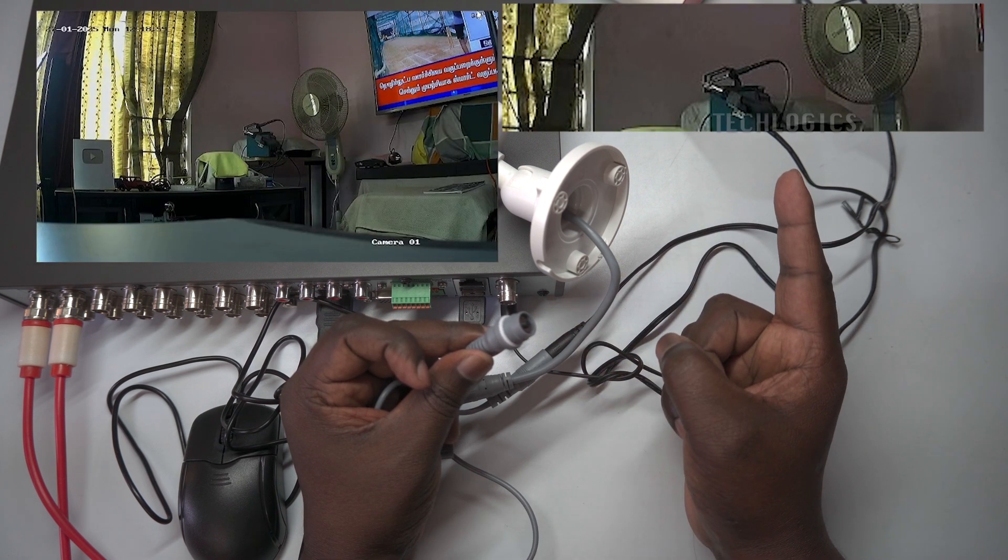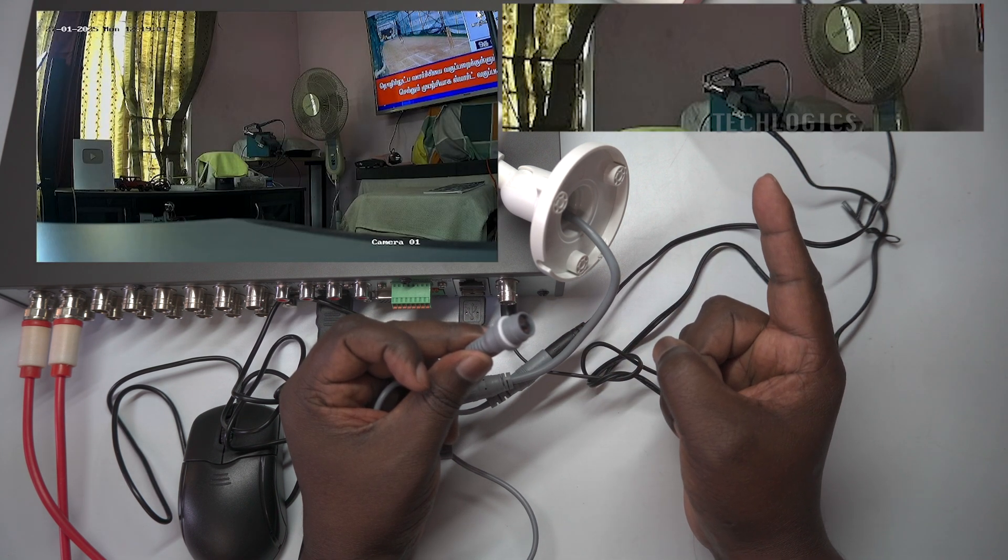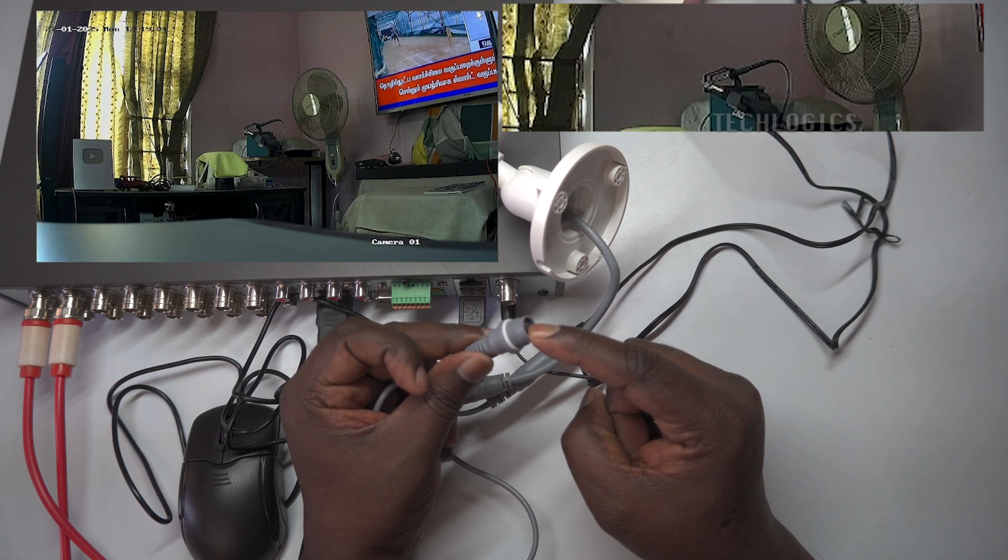To initiate the signal change, ensure that both the DC power and video cable are connected from the camera to the DVR.